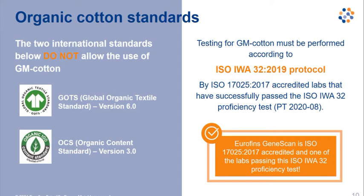Two of the main standards for organic cotton do not allow the use of GM cotton: the Global Organic Textile Standard and the Organic Content Standard. According to these standards, cotton materials should be tested for GM cotton according to the ISO IWA32 protocol, published in 2019, and the analysis should be carried out by ISO 17025 accredited labs that have successfully passed the recent proficiency test for this GMO testing protocol.